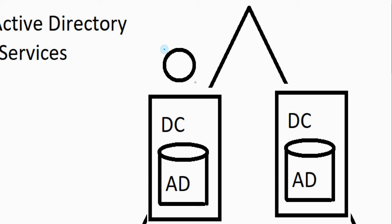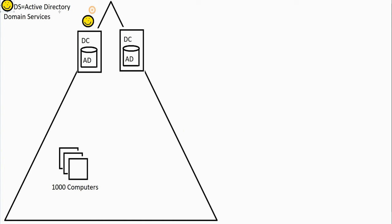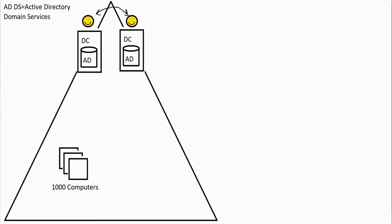When you create a user account on one domain controller, replication occurs between all domain controllers. So that user can log on to any one of thousands of machines, and it's going to authenticate with the domain controller. The authentication protocol used is Kerberos. There was also an older protocol called NTLM — that was for legacy devices prior to the year 2000. These protocols allowed encrypted passwords and secure authentication.